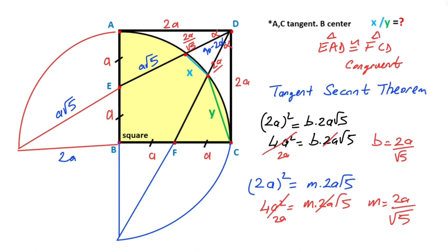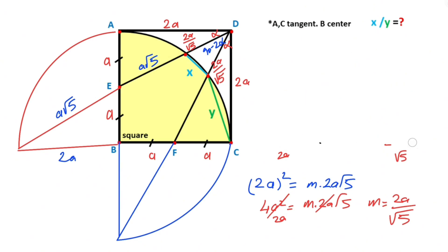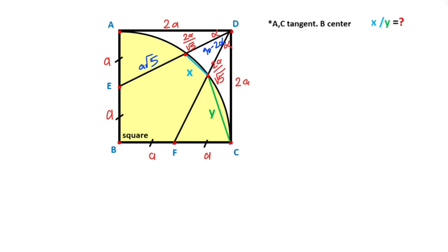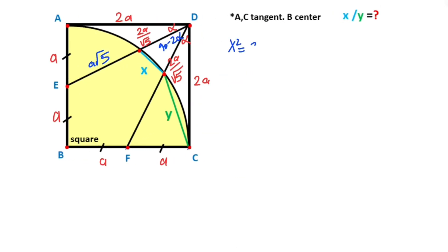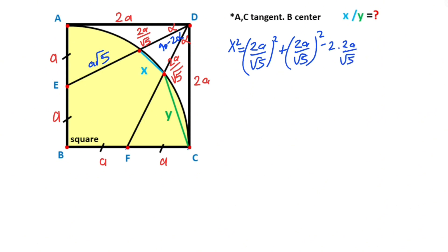Notice that B and M are equal, which means the triangle is isosceles. Let's clear here. After that, for this triangle, if we apply the cosine rule: X² = (2A/√5)² + (2A/√5)² minus 2 times (2A/√5) times (2A/√5) times cosine(90 − 2α).